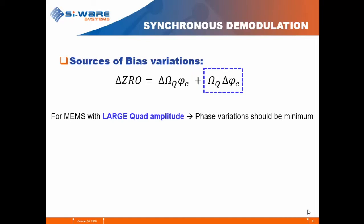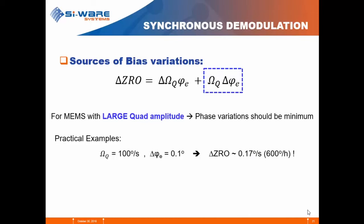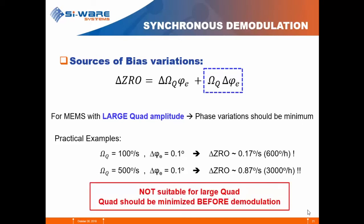The second term shows that for large absolute quadrature amplitude, the change in zero rate output is very sensitive to phase variation and is even more severe. If the quadrature is 100 degrees per second and the change in phase error is only 0.1 degrees, the change in zero rate output is 600 degrees per hour. For a quadrature of 500 degrees per second — which can be a practical case — the change is in the range of 3000 degrees per hour. This method is not suitable for large quadrature; the quadrature should be minimized before demodulation.